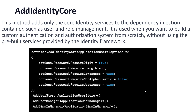With AddIdentityCore, you define ApplicationUser and use the options similarly to AddIdentity. However, you can notice that you need to add AddUserStore, defining ApplicationUserStore, UserManager, AddSignInManager with ApplicationSignInManager, ApplicationUserManager, and ApplicationUserStore. That is the key difference: in AddIdentity, stores, managers, and sign-in managers are already pre-configured, but AddIdentityCore only provides core features, so you define everything from scratch from the beginning.